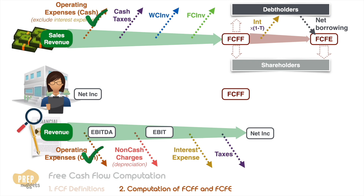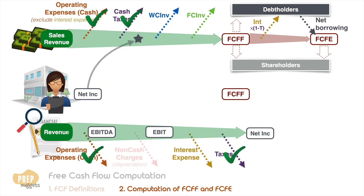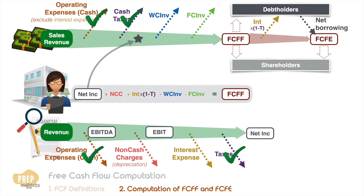To derive FCFF from net income: net income is after taxes, so we start here to cancel out taxes. Net income is after non-cash charges, so we add them back to calculate cash flow. Interest expense should also be added back, as it is cash available to debt holders. Since interest expense is tax deductible in most jurisdictions, the net cash interest added back is reduced by the marginal tax rate. We then subtract working capital investments and fixed capital investments to get FCFF. This is the most frequently tested formula.